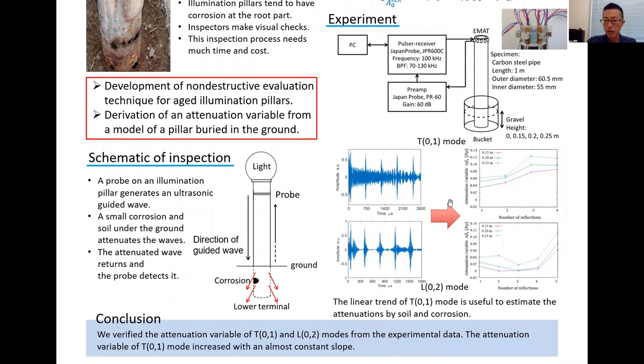The attenuation variable of T01 mode shows an almost linear tendency. The linear trend of T01 mode is useful to estimate the attenuation by soil and corrosion.